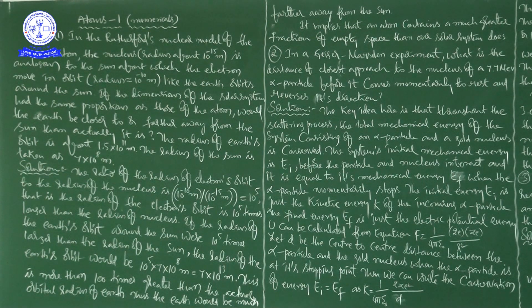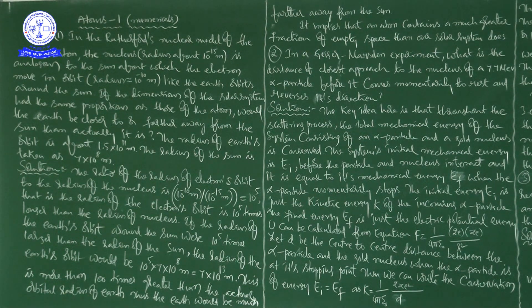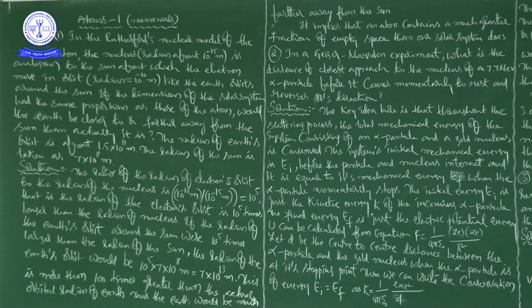In the Atoms chapter, first is Rutherford's atomic structure. Based on that: radius of the orbit, magnitude of the force, the trajectory of the alpha particle, and the electron orbits — we have problems on these topics.